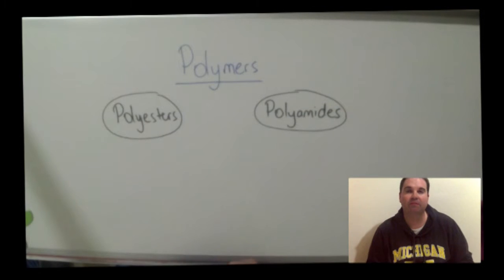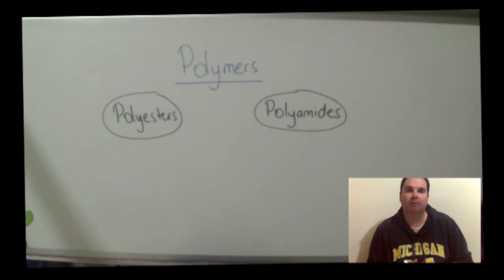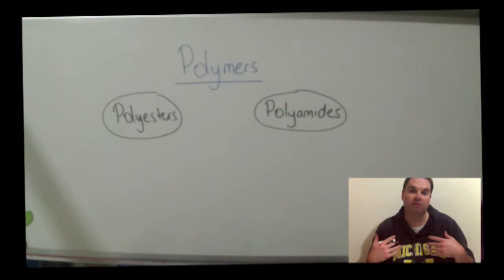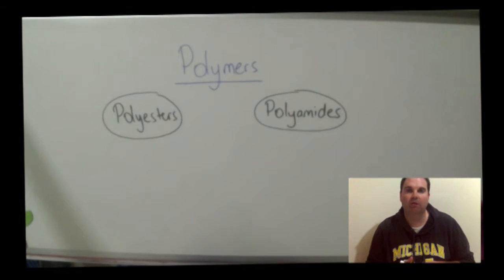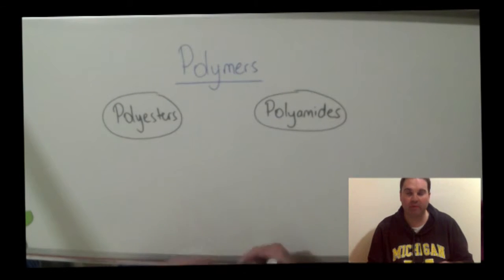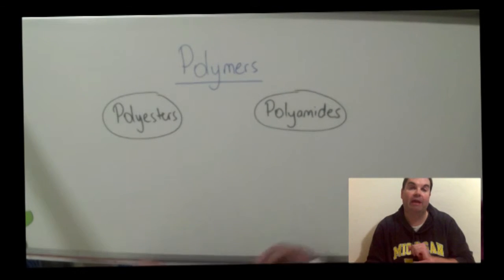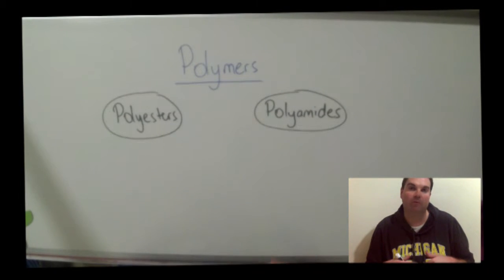Hi guys, welcome to this video which is all about polymers. Tonight I'm going to be talking about the two different types: polyester and polyamides, how to draw them, looking at the repeating units, how you take the monomers and add them together, and how to work out what your monomers are from the polymer chain.